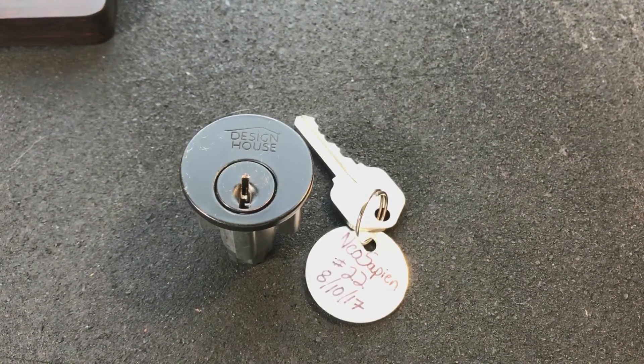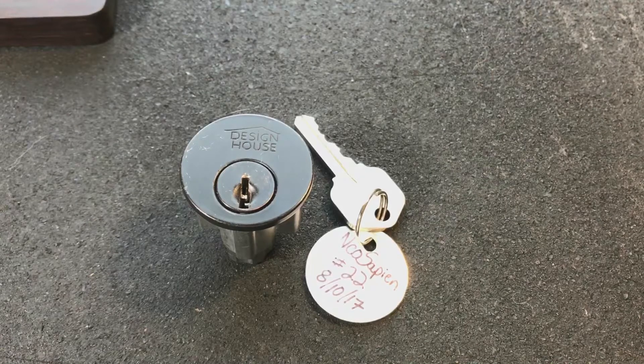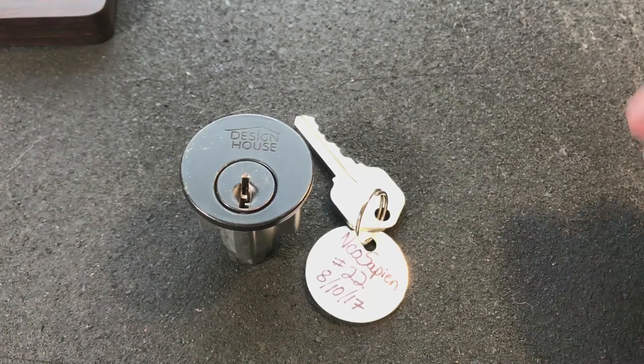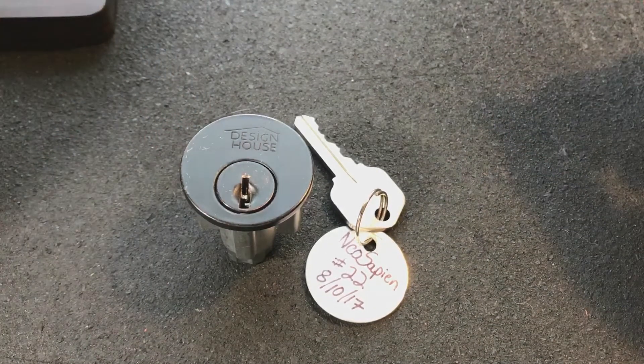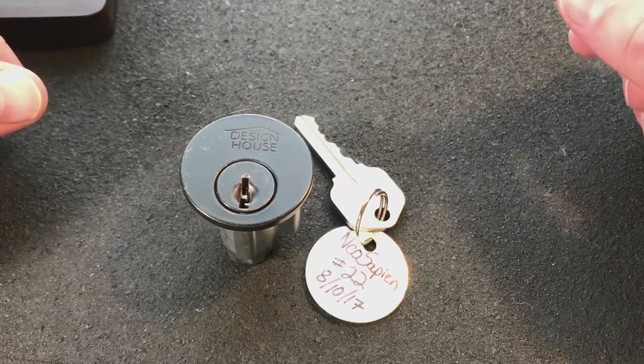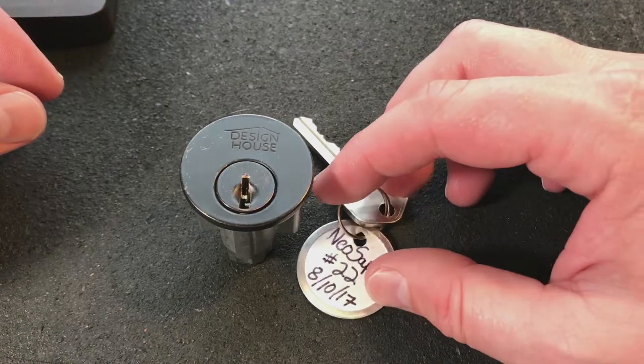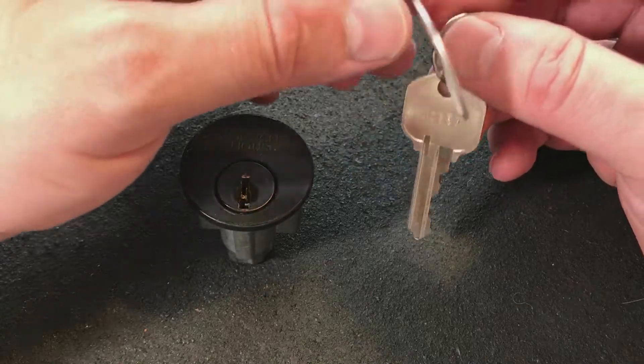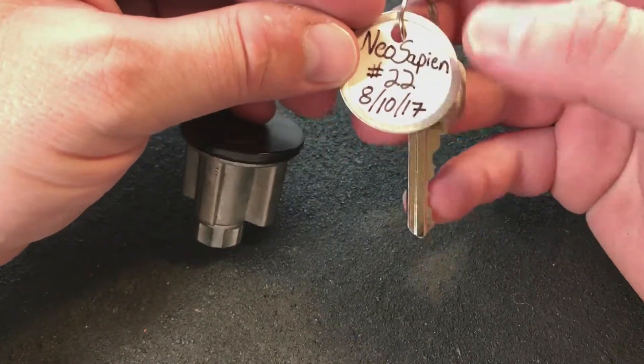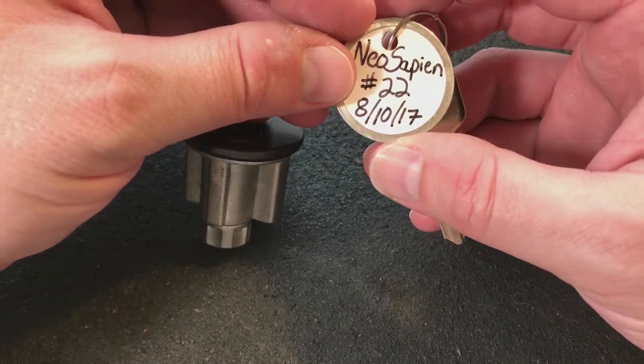Hey guys, I'm the lock picking patrolman and what I've got today is a challenge lock. It was sent to me by squint and it was pinned up by neo sapien. It's his number 22, pinned up on August 10th of 2017, and he has named this the V twin.